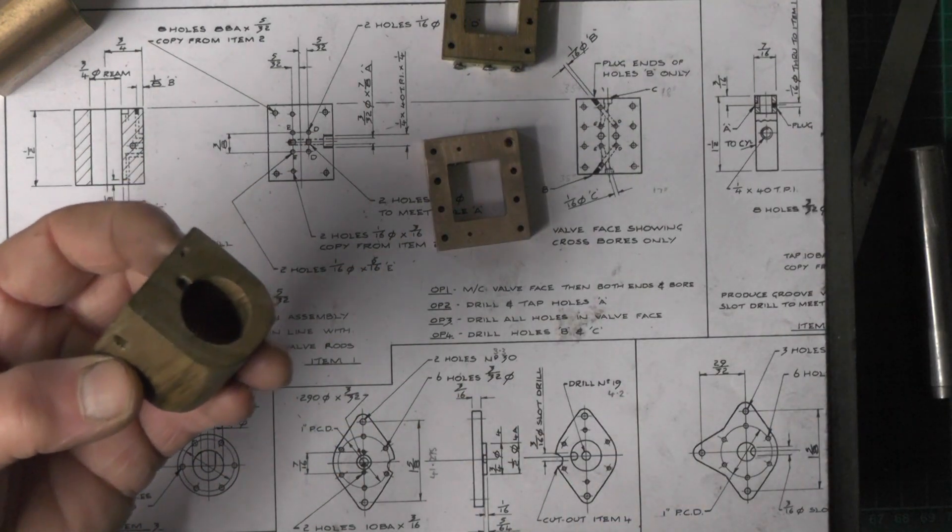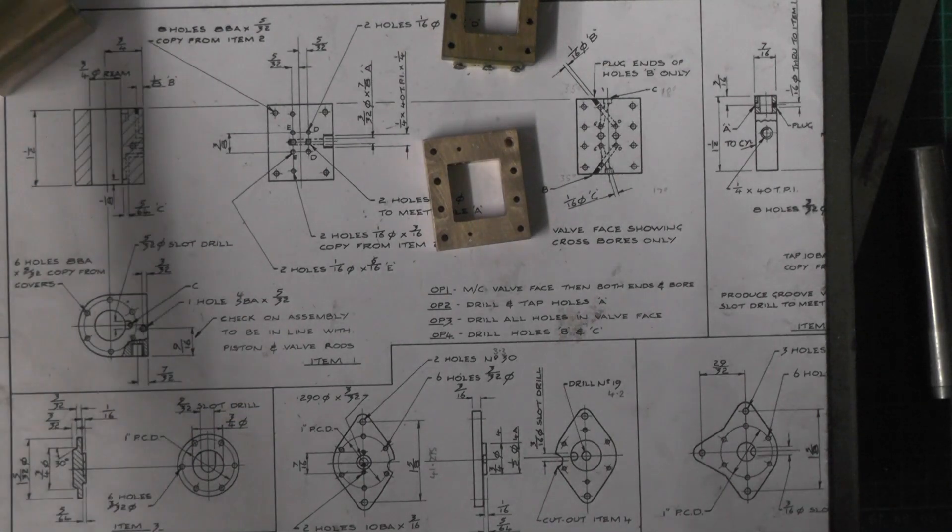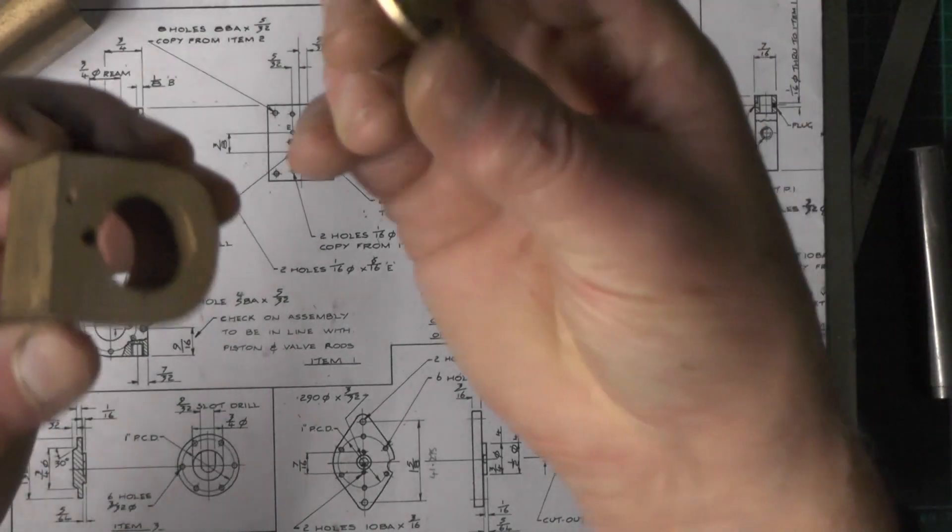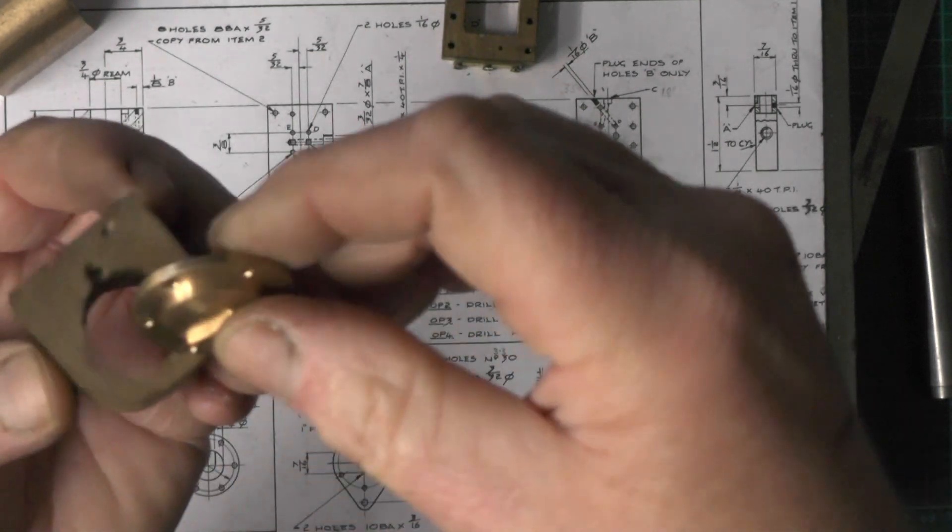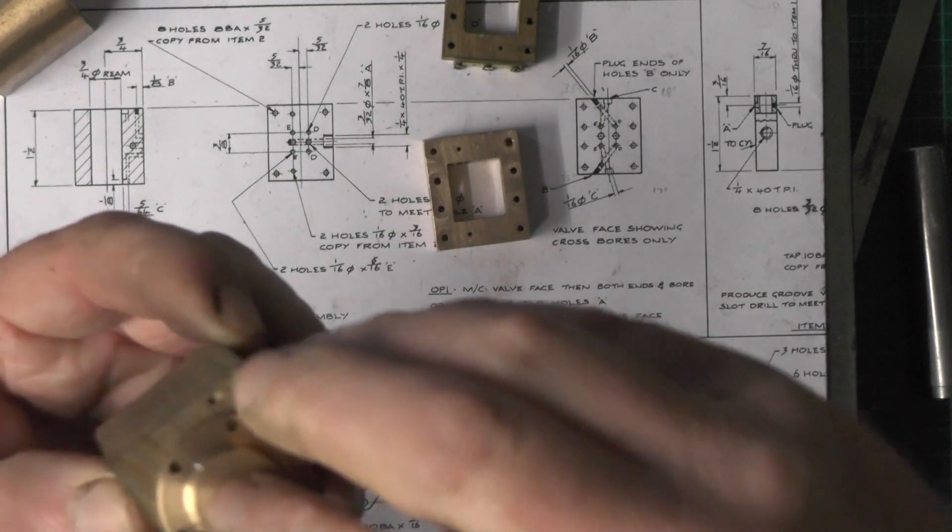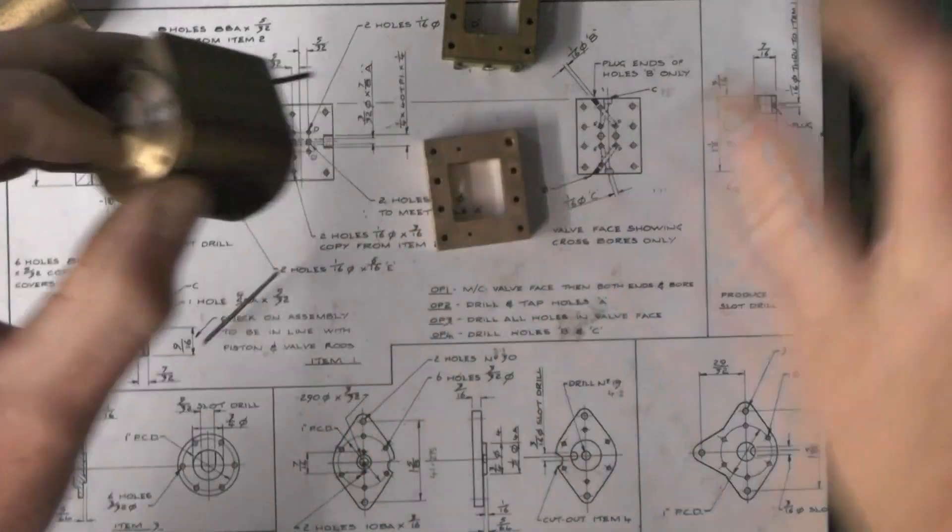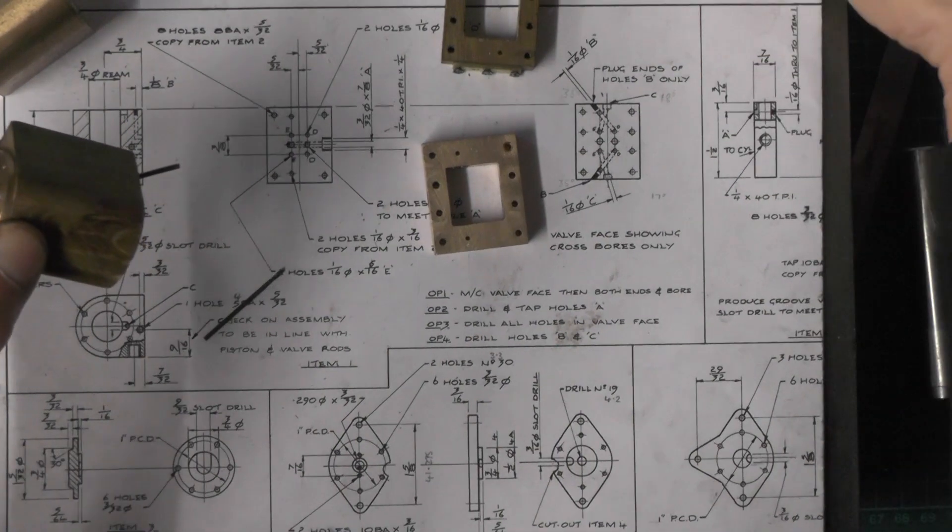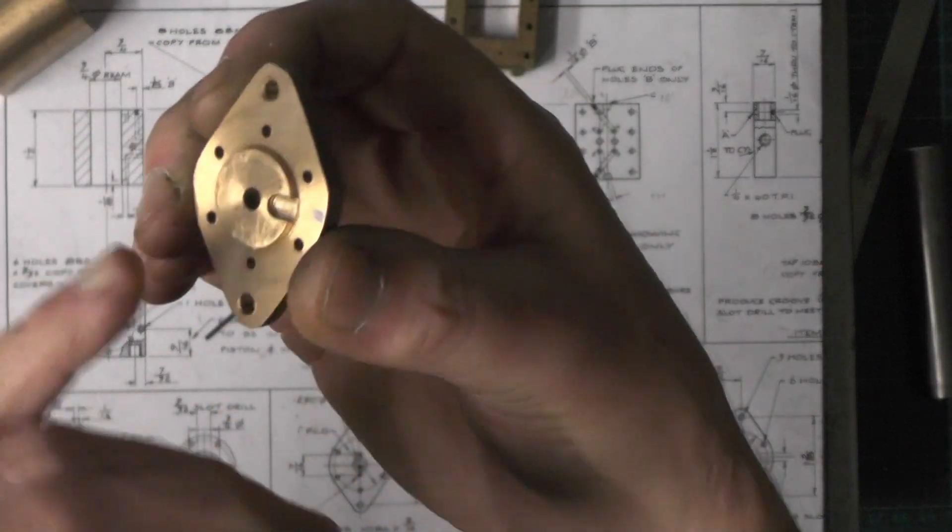And then the covers, when you put your covers on, I made these covers earlier on in one of the previous parts. They've also got corresponding slots in that match up with that slot, and that's what lets the steam into the actual cylinder. Same on the other side. That's got a slot cut in to match up with the slot on that one.